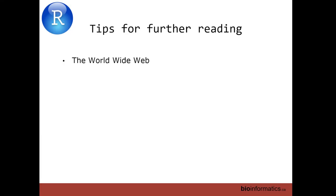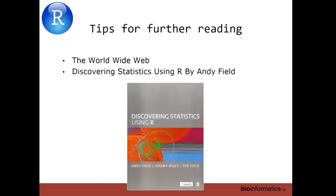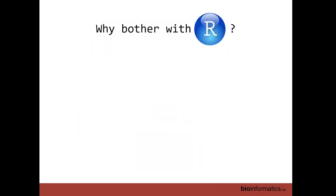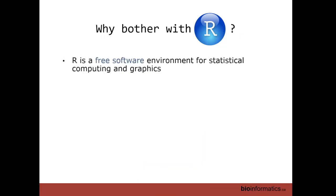Some tips for further reading: R is open and free, and because of that many people are contributing help guides throughout the internet, including workshops and courses. I really encourage you to use Google to find your solutions — most often you'll find that if you're encountering an issue, someone else has encountered a similar issue before and published the result online. But if you want a more analog user guide, this book by Andy Field — 'Discovering Statistics Using R' — is outstanding. He makes analysis really accessible, and I can't recommend it enough.